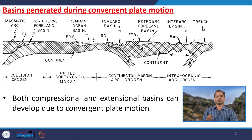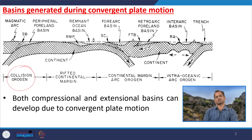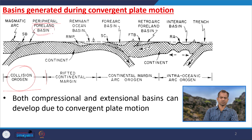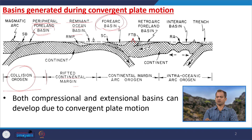In today's class, we are specially emphasizing sedimentary basins associated with convergent plate margin settings. Looking at the figure, we have classified the convergent tectonic environment into different settings. One is the collisional origin where two continents are colliding, creating a peripheral foreland basin. Then we have a remnant ocean basin at the rifted continental margin, a fore-arc basin at the arc system, and a back-arc or retro-arc basin.